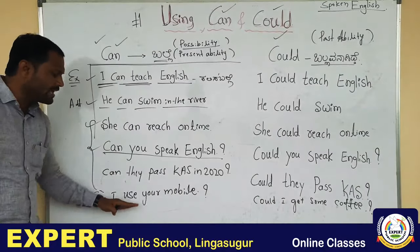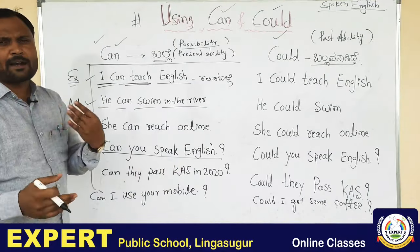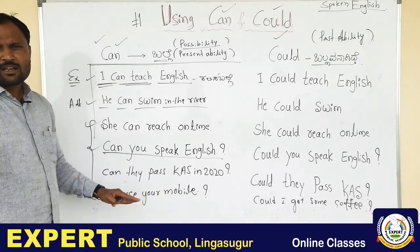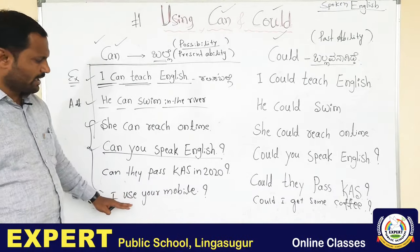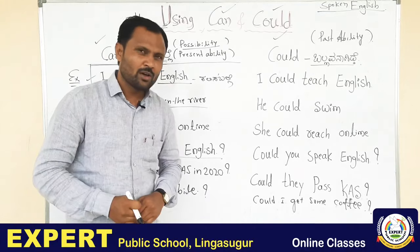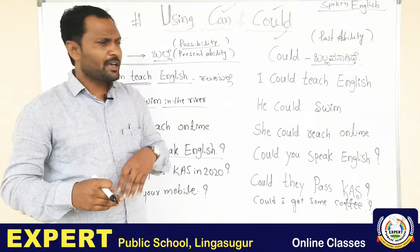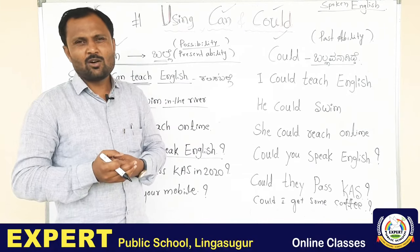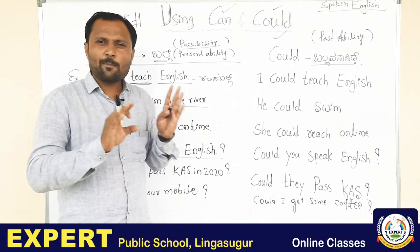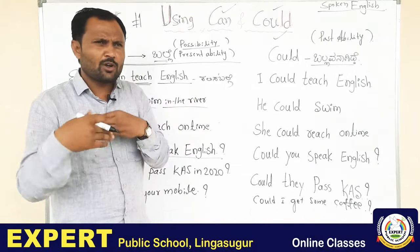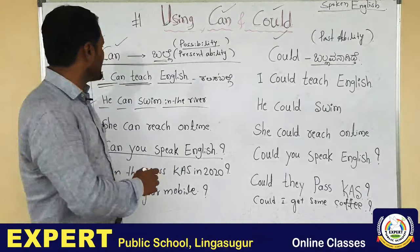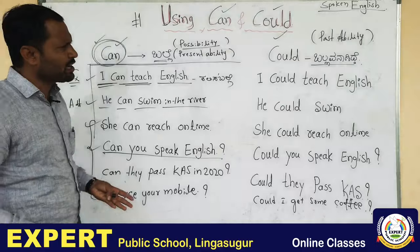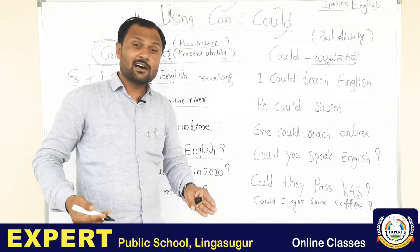Can is also used for requests. For example: Can I use your mobile? Can I use your book? Can I use your pen? Can I go outside please? Can you stop the argument? So you can use 'can' for making requests. Can is very important and is used for requests.